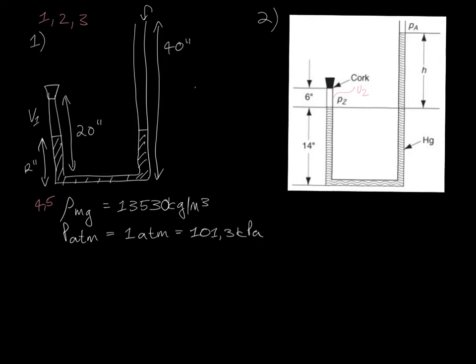Step five is choosing a basis and since we don't have the diameter of the manometer we can choose a convenient basis for V1. Let's assume that V1 is simply one unit of volume.